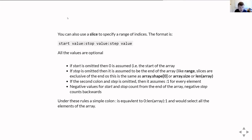You can also use a slice to get a specific range of indices. The general format is start:stop:step. All values are optional — if you don't provide a start, it assumes zero; if you don't provide a stop, it assumes the end of the array. Like range, slices exclude the final end value, so it's up to but not including the stop value.